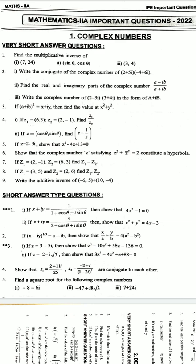If z equals x plus iy equals 1 by 1 plus cosine theta plus i sine theta, then show that 4x square minus 1 equals 0. If x plus iy equals 3 by 2 plus cosine theta plus i sine theta, then show that x square plus y square equals 4x minus 3.